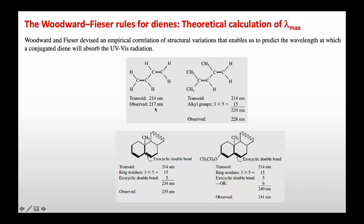When observed using a UV spectrometer, this transoid diene shows 270 nanometers — very close. Now if we make it substituted with three methyl groups, this transoid diene absorbs at 214 nanometers as the base value. Each alkyl group increases it by 5, so three methyl groups give a total increment of 15. The predicted value becomes 229 nanometers, and the observed value is 228 nanometers — very close. The Woodward-Fieser rule successfully predicted the lambda max for this three-methyl substituted transoid diene.